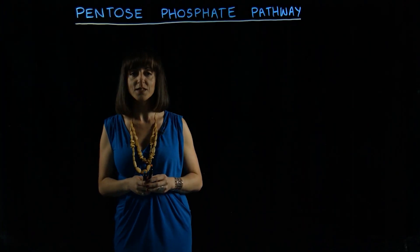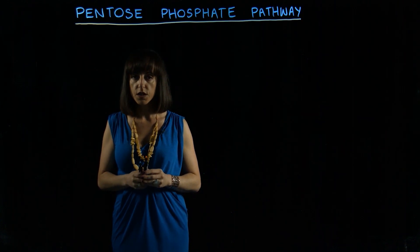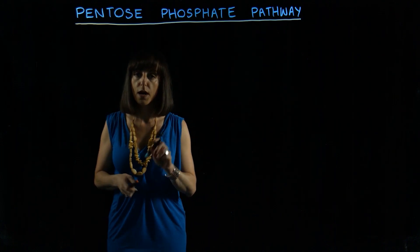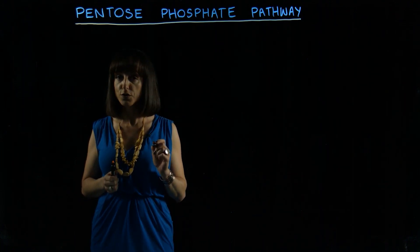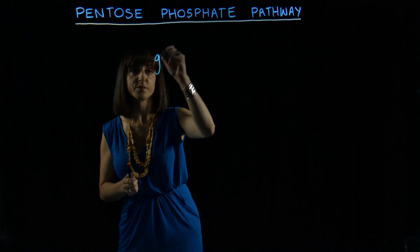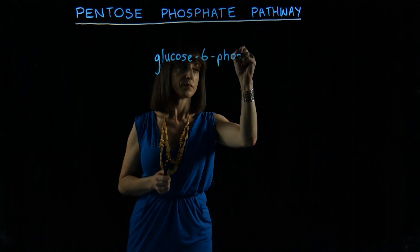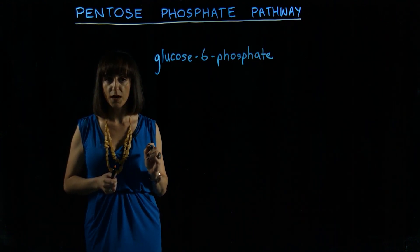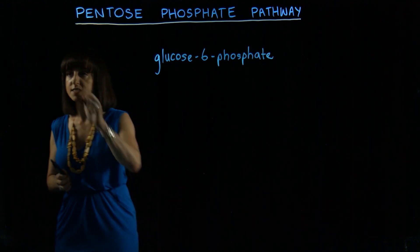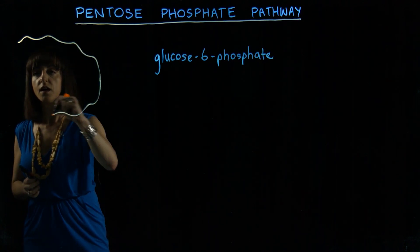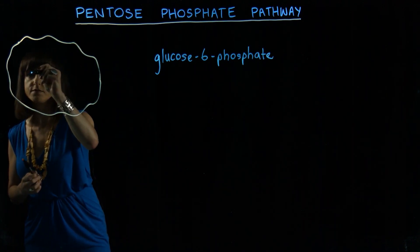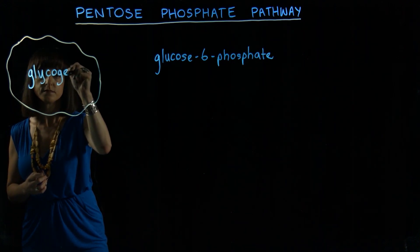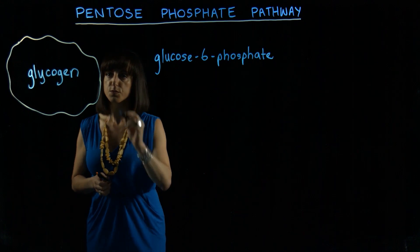Before I talk about the details of the pentose phosphate pathway, I'm going to give you a brief overview of the whole process. The pentose phosphate pathway starts with a molecule called glucose 6 phosphate. You might recall that intermediate in biochemical pathways because it's actually a breakdown product of glycogen within cells, which is ultimately a store of glucose molecules.